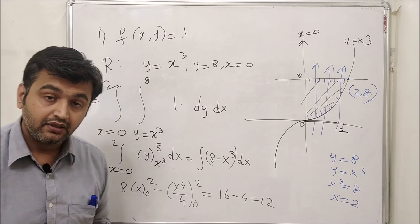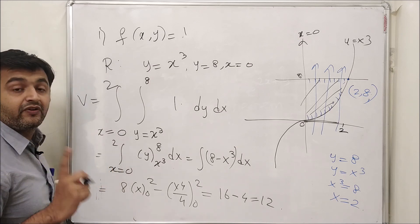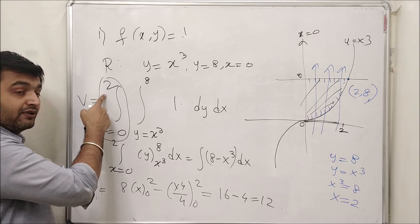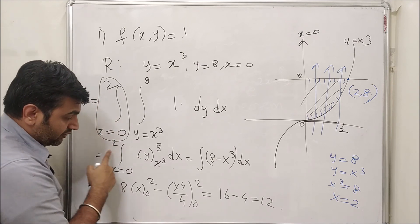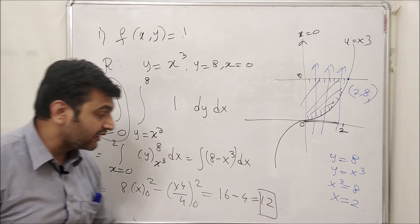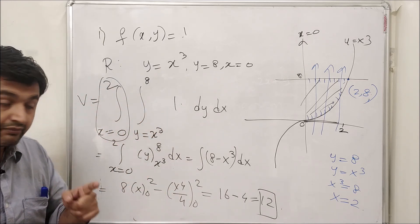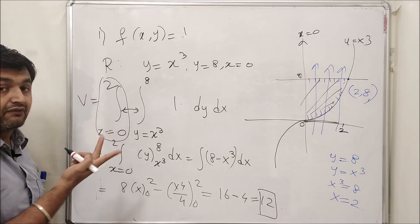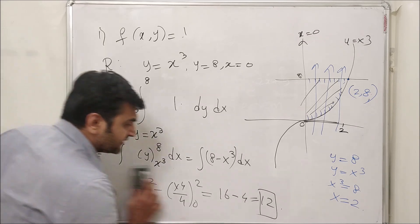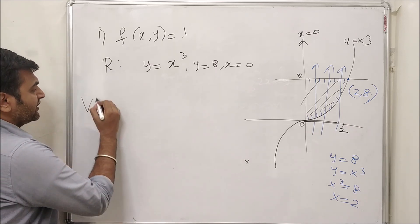Now suppose you want to interchange the order to dx dy. Can you simply swap the limits as you did for rectangles? The answer is no. Always keep in mind: the outer limits must always be numbers — there should be no variable on the outer side — because at the end you need to get a number. Therefore your outer limits will always be numbers, never variables.